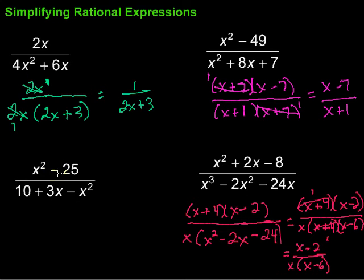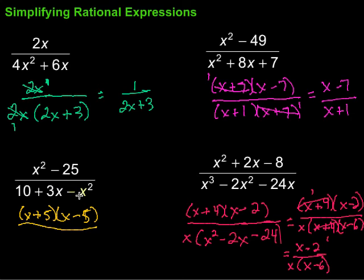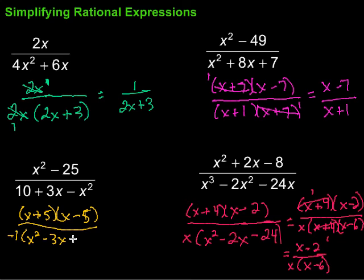Now let's give this last one a shot. On top, we have a difference of squares again — x² and 25 are both perfect squares, so that's going to break up into (x + 5)(x − 5). On the bottom, I'm going to factor out a negative 1 because my x² term is negative and I'd like it to be positive, so it looks like a trinomial we can factor. So the first thing I'm going to do is factor out a negative 1, then flip these terms around: negative 1 times (x² − 3x − 10). If I distributed it back through, I'd end up back where I started.